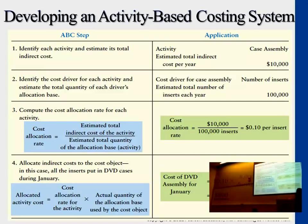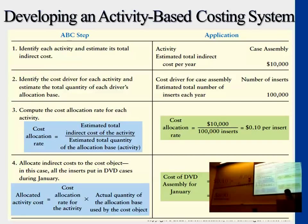Now we find a driver for this — what actually contributes to more cost here. The driver is the number of inserts. There are seven DVDs required for the specialized custom DVD sets. The more inserts required for a job, the more cost incurred for case assembly. The regular ones only require two DVD inserts, so their cost is lower than the specialized one. Let's assume the total inserts required for the job is 100,000 inserts.